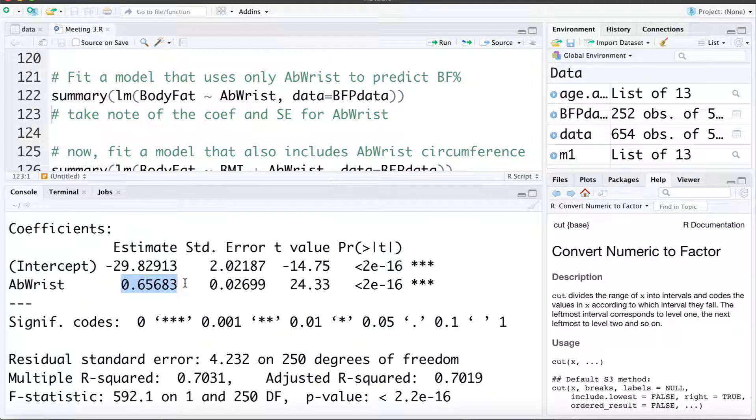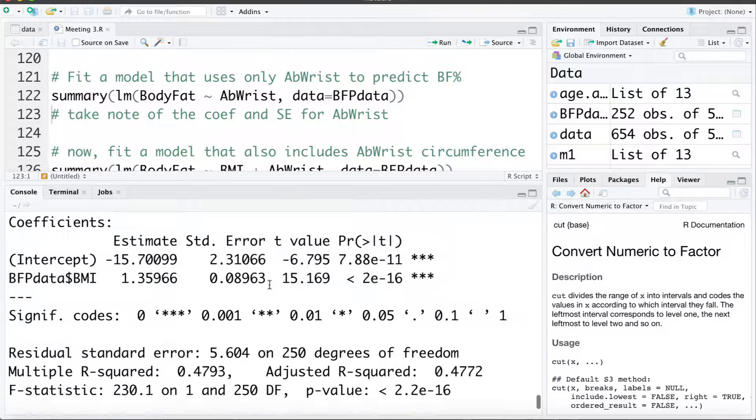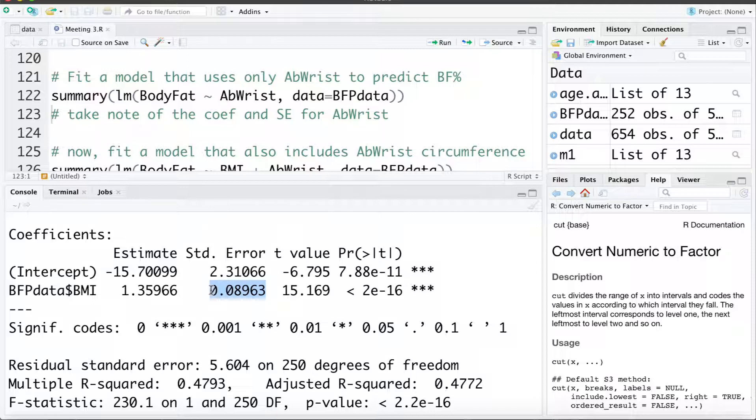Let's interpret this coefficient. When abris increases by one unit, body fat increases by 0.656. Again conceptually this makes sense as abris measurement gets larger, or as our body size gets larger, body fat percentage increases with a standard error of 0.03. Let's look at what happens when we include both those variables BMI and abris in the model at the same time. And I want to take note of these standard errors and how those are going to get inflated. So just remember the standard error for the abris coefficient was 0.03 and the standard error for the BMI coefficient was 0.09 when put in a model on their own.